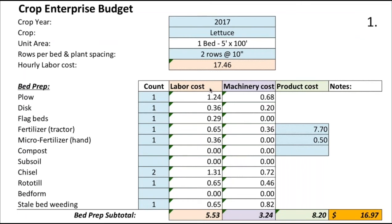Really quickly, I'll go through a full enterprise budget. If you've looked at Richard Wiswall's work, you'll recognize this — I went ahead and tweaked what he did for myself. If you buy his book, it comes with some CDs and blank templates you can upload to your computer and play with. The basic structure is you're just entering into the blue cells. Here: 2017 lettuce, the standard area I chose was one bed — for us that's five by 100 feet. You put in a plant spacing, and the labor cost is a composite of a higher rate for a manager and lower rates for workers at a certain ratio.